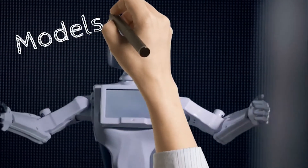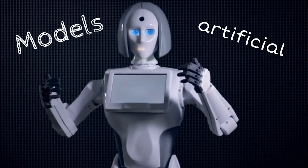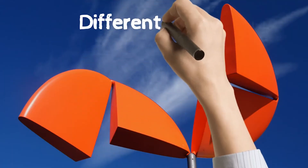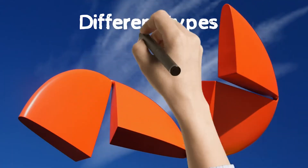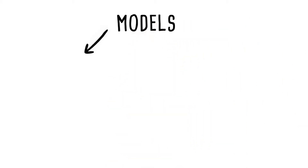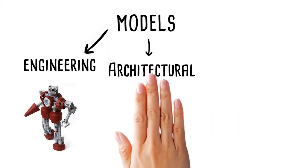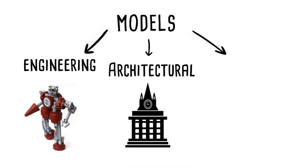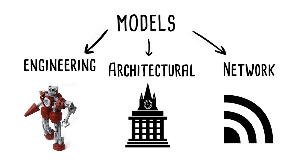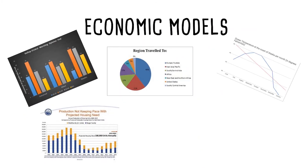Models are artificial representations of real situations. There may be different forms of models depending on the type of situation and environment. For example, engineers study engineering models, architects study architectural models, computer scientists study network models, and similarly economists study economic models.